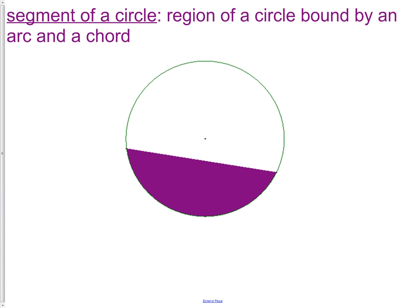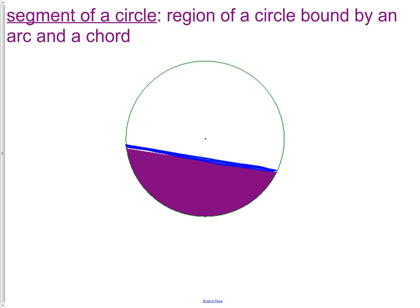The segment of a circle is a region of a circle bounded by an arc and a chord. This purple area here is made by drawing a chord — a chord goes across the circle, touches it on two points — and it connects and makes an arc. So the arc and the chord together make that segment of a circle.